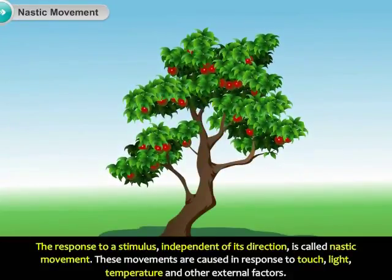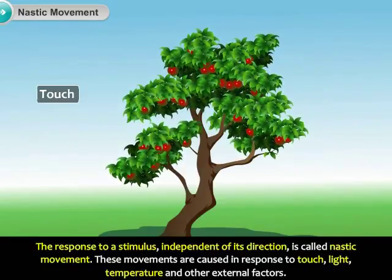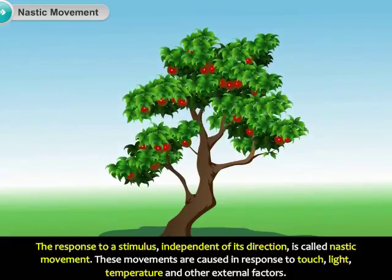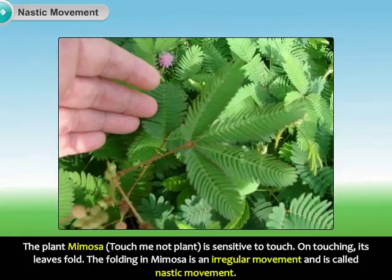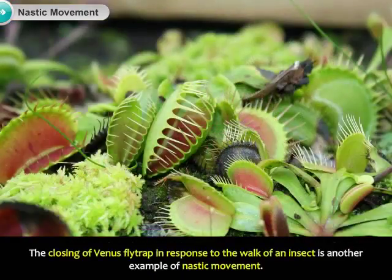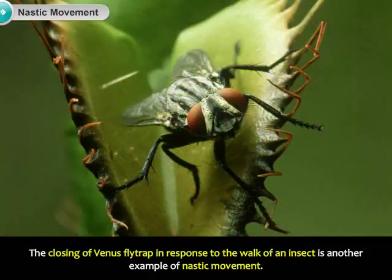The response to a stimulus, independent of its direction, is called nastic movement. These movements are caused in response to touch, light, temperature, and other external factors. The plant Mimosa, also known as the touch-me-not plant, is sensitive to touch. On touching, its leaves fold. The folding in Mimosa is an irregular movement and is called nastic movement. The closing of a Venus flytrap in response to the walk of an insect is another example of nastic movement.